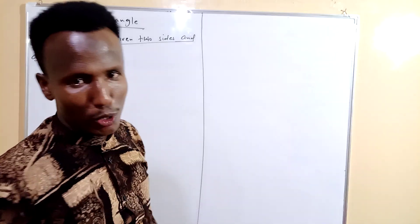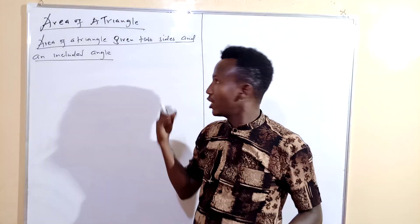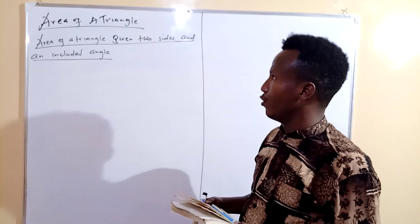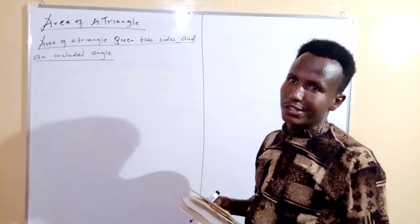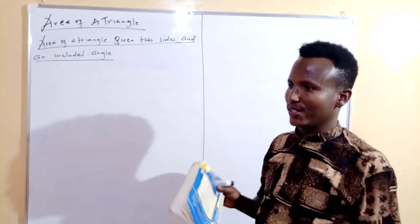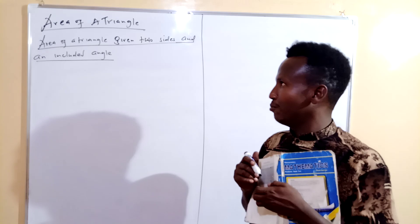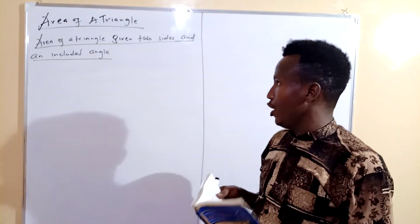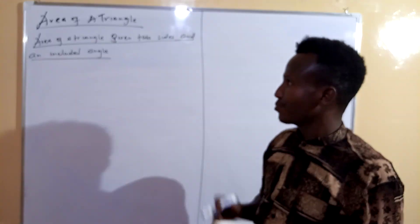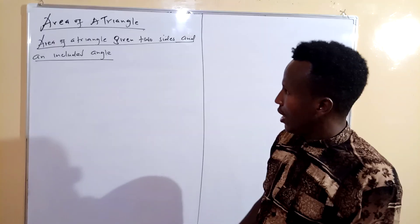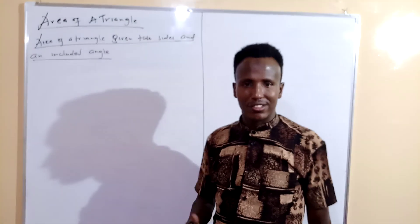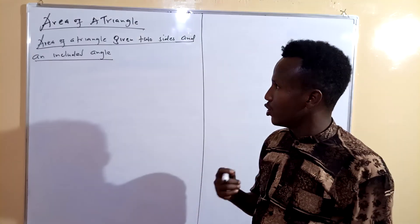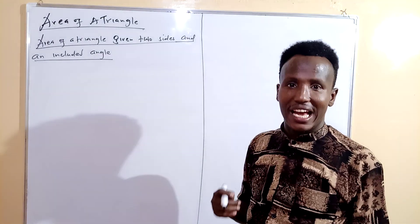Welcome back. This is Abdi Mahamano, and today we are covering the area of a triangle for Form 2 mathematics. Remember, in primary school we learned that the area of a triangle is equal to half base times height, provided the height and base are given. But here in Form 2, when we talk about the area of a triangle, there are two scenarios: one is where you are given two sides and an included angle.